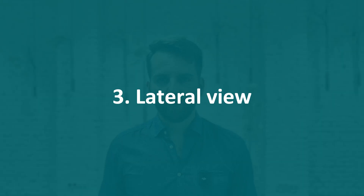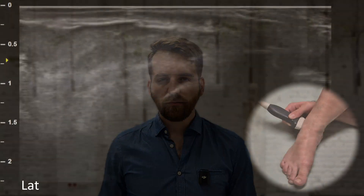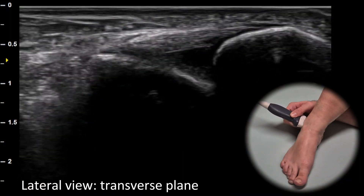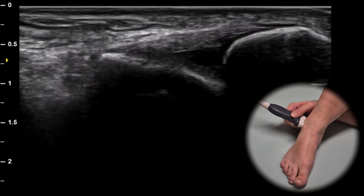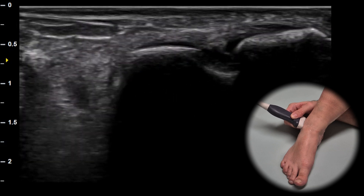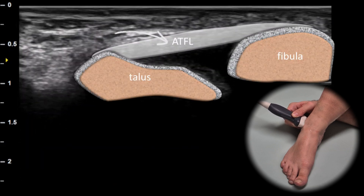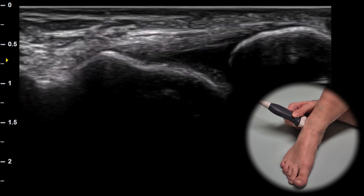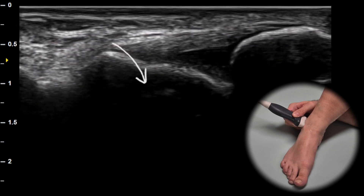Next view is the lateral view. When we place the probe anterior to the lateral malleolus in the transverse plane, we can evaluate the anterior talofibular ligament, the most commonly injured ankle ligament, which lies between the fibula and the talus.